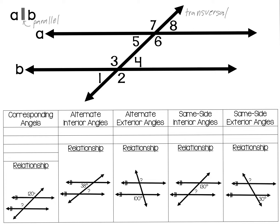First, we have angles that are in the same position, like angles 1 and 5, but are on different lines. These are called corresponding angles. So angle 1 and angle 5 are corresponding. Other examples of corresponding angles are angle 2 and angle 6 — angle 2 is in the bottom right corner and angle 6 is in the bottom right corner, but they're on different lines.